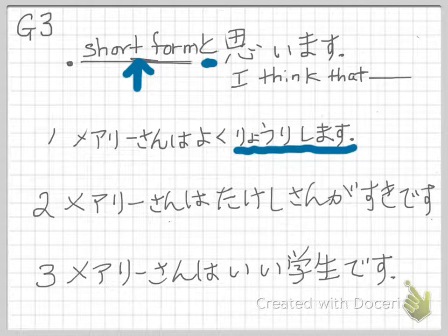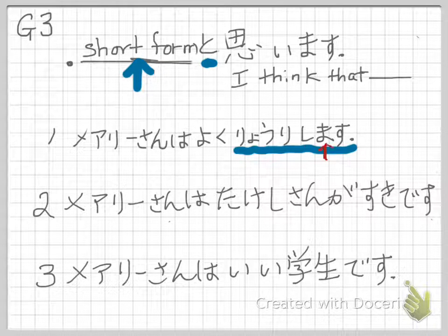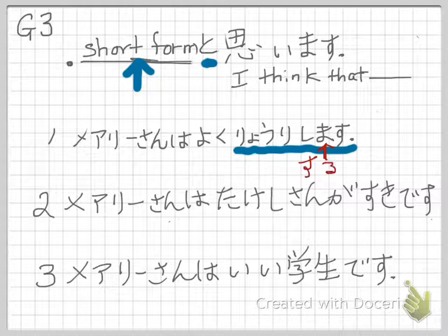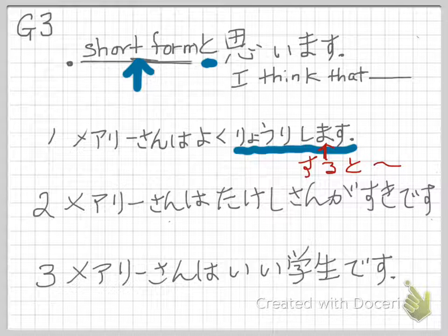This part should be short form. Ryouri shimasu — this shimasu is masu form. So you have to say suru, and then to omoimasu. So the full sentence is: Mary-san wa yoku ryouri suru to omoimasu. That's your sentence.